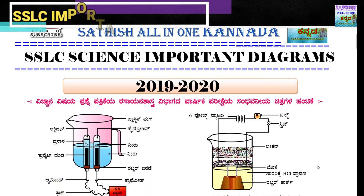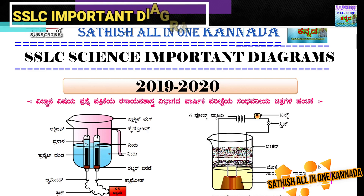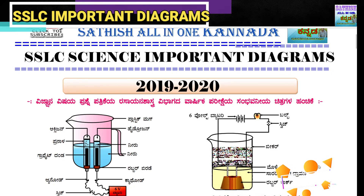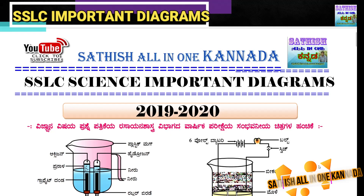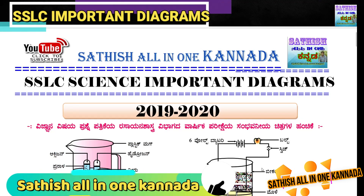Today's topic is Vignana Prashnipatri — Science Most Expected Diagrams. You will see 17 to 18 or 19 marks. You will see the diagrams and the exam marks.